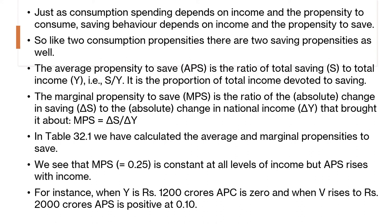The average propensity to save, APS, is the ratio of total saving to total income — S divided by Y — representing the proportion of total income devoted to saving. The marginal propensity to save, MPS, is the ratio of the absolute change in saving to the absolute change in national income — delta S divided by delta Y — representing the change in saving as a result of the change in income. In our example, MPS is assumed constant at all levels of income, but APS rises with rises in income.